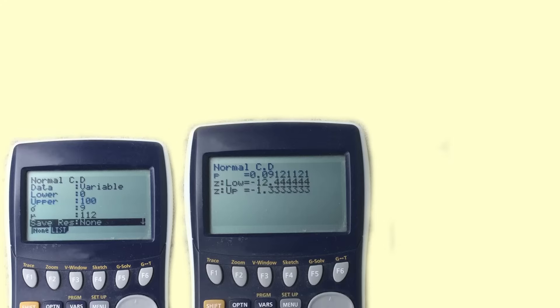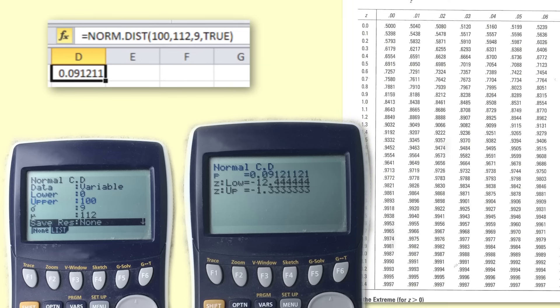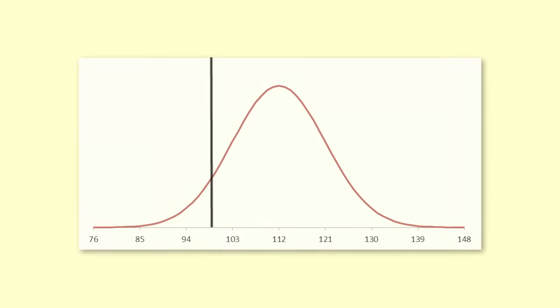We can use a calculator, a spreadsheet, or tables, and find the value 0.091. You can see that 0.091, or 9% of the area, is to the left of the number 100. We would expect 9% of ice creams to weigh less than 100 grams.